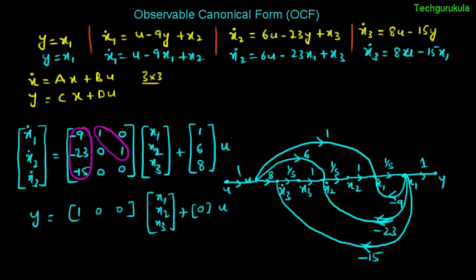This is how the signal flow graph looks. Observe that in observable canonical form, signals from x1 feed into every node and the input also comes into those nodes. In controllable canonical form, signals go outward from the nodes — signals are broadcast out rather than coming in.